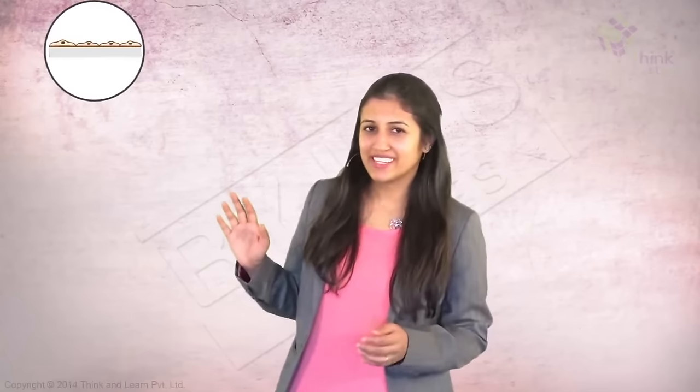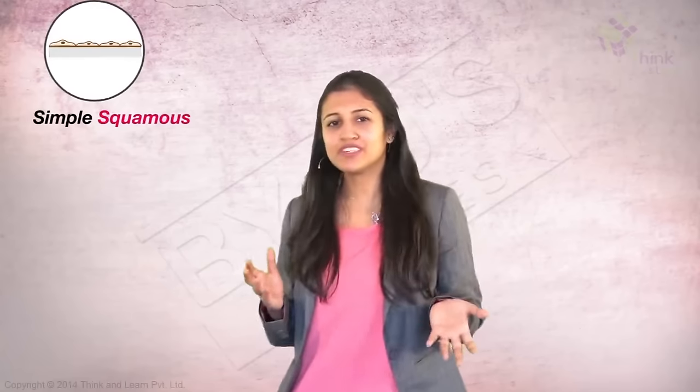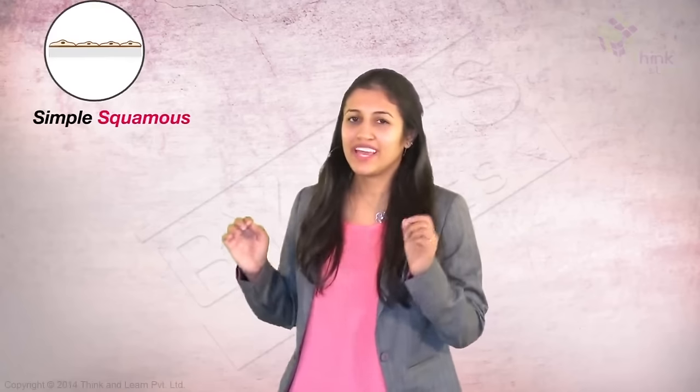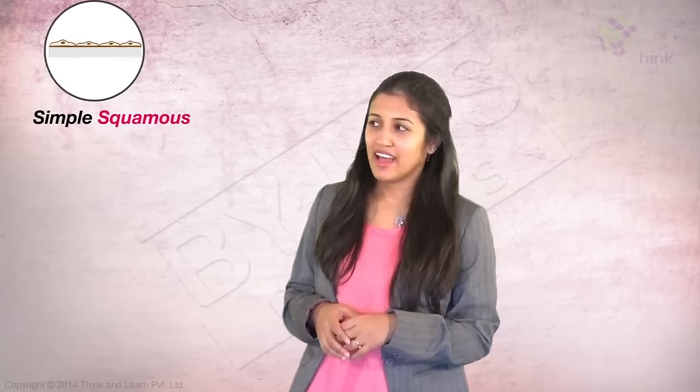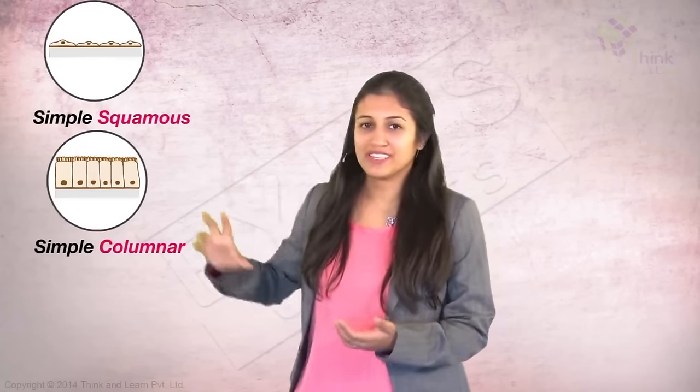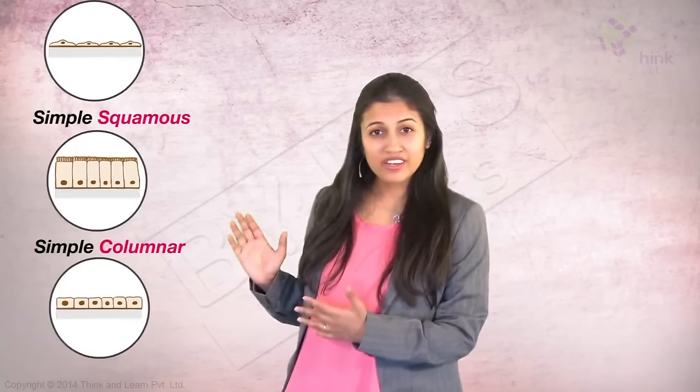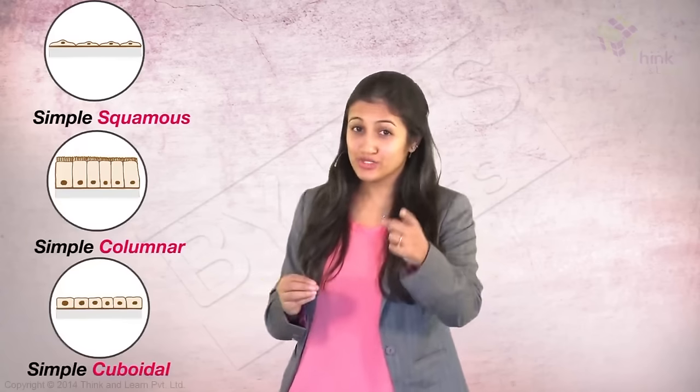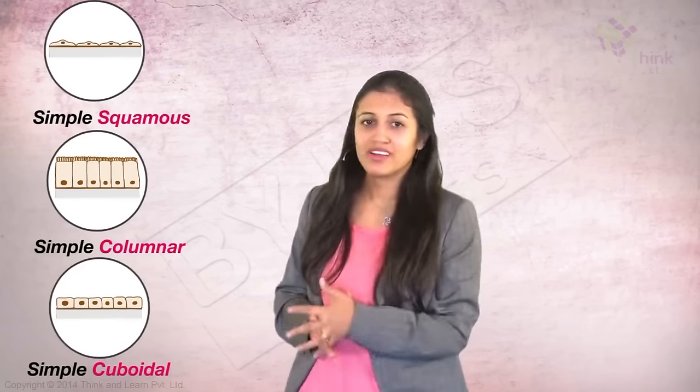Quiz time. What's the first one? I'm sure you'll get this. It's simple squamous, simply because there is one layer of squamous epithelial cells. And this one, simple columnar - single layer columnar cells. And this one, simple cuboidal. You see where I'm getting? I'm sure you are.